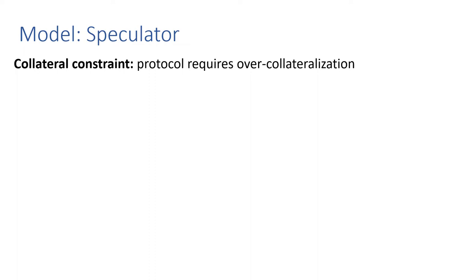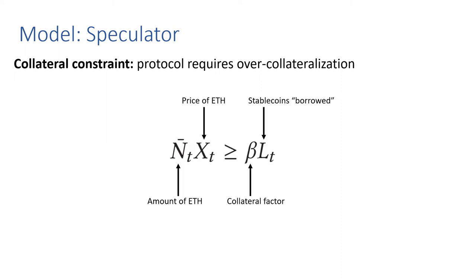To describe the model, let's focus on how the speculator is making decisions. They have a collateral constraint, which is over-collateralization encoded by the protocol. In particular, the value of the locked ETH held by the speculator must be greater than or equal to a collateral factor times the stablecoins that have been borrowed into existence by the speculator.